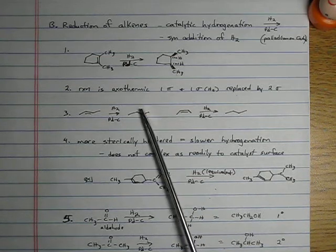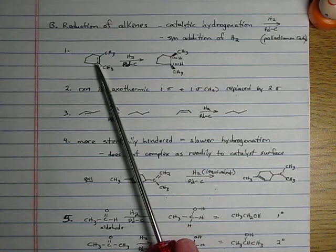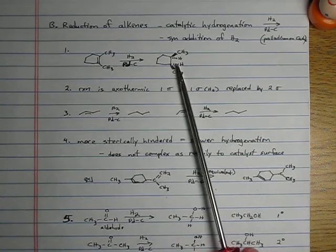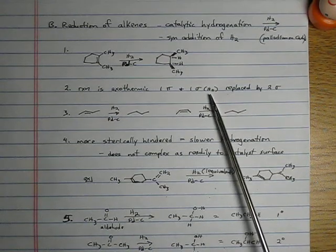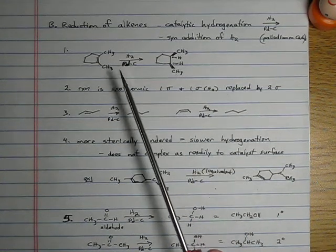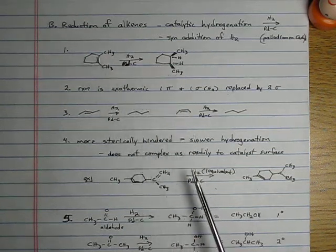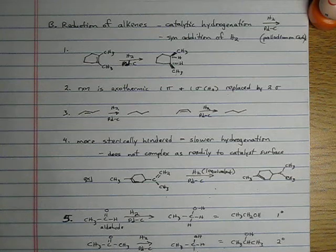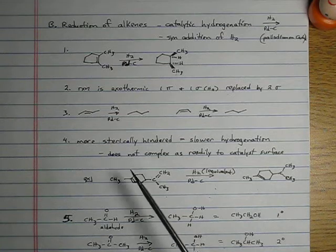Note this reaction is exothermic, because this reactant had a pi bond. No pi bonds here. Sigma bonds are stronger than pi bonds. Sigma bonds are more stable than pi bonds. So we got rid of this less stable pi bond and added a more stable sigma bond here.